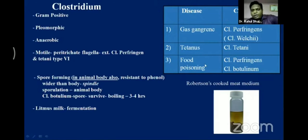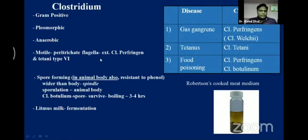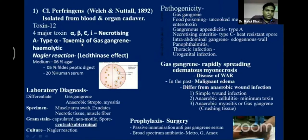For growth of this anaerobic organism, we use anaerobic medium — for example, Robertson's cooked meat medium. Clostridium perfringens produces four major toxins; the most important is the alpha toxin. To demonstrate alpha toxin released by Clostridium perfringens, we perform the Nagler reaction, which is controlled by the lecithinase enzyme (also called lecithin effect).